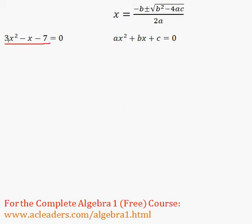Okay, let's solve 3x squared minus x minus 7 equals 0 with the quadratic formula.